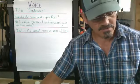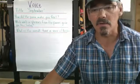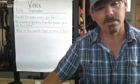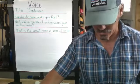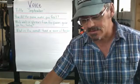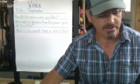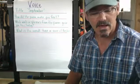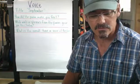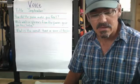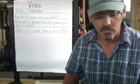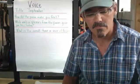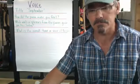Your assignment is to read The Alchemist in the City. I will read it for you. And you're to answer the questions in the worksheet about how it makes you feel, what are some phrases and words that gave you this feeling, and then what's the overall tone or voice? The Alchemist in the City. My window shows the traveling clouds, leaves spent, new seasons, altered sky. The making and the melting crowds, the whole world passes. I stand by. And that was written by Gerard Manley Hopkins.